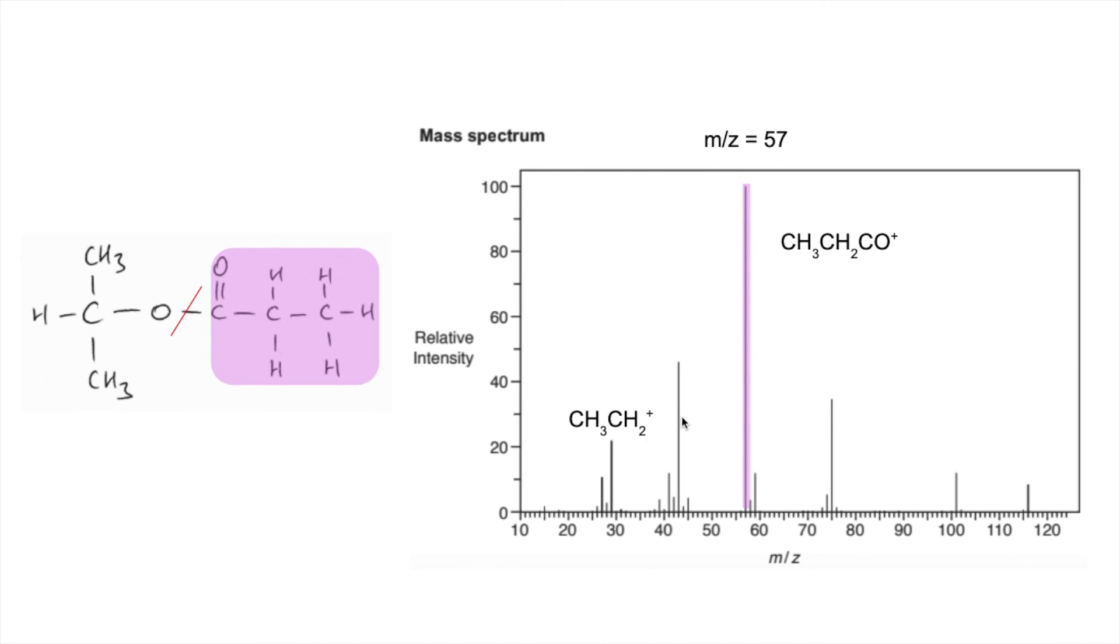43 is quite common as well. So that's this part of the molecule with a plus sign on, CH3 twice CH+. And the only other one I'm going to look at is this one here at 59, and that's due to this part of the molecule here fragmented, so CH3 twice CHO+.